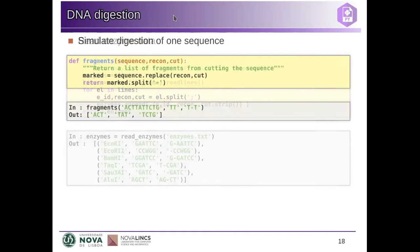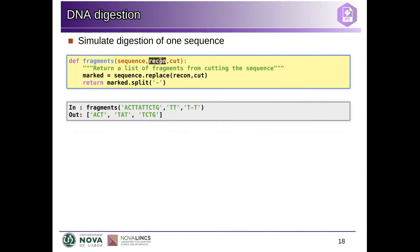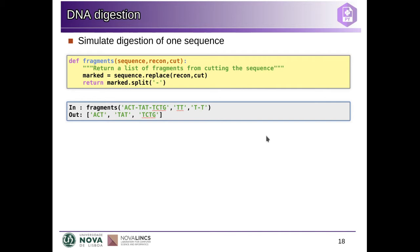Now we have these two functions in memory. We can get in memory the sequences and the enzymes. Now we need this auxiliary function: given one sequence and the enzyme data, we replace in the sequence wherever the recognition sequence appears — we insert a cut mark at the cutting point. This marks the sequence wherever, for example, the two T's appear. Then we split on this mark — the dash sign — and we get the fragments for our sequence.